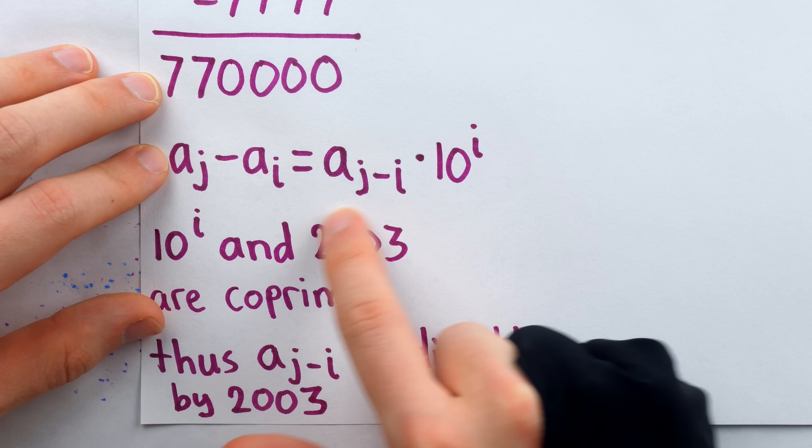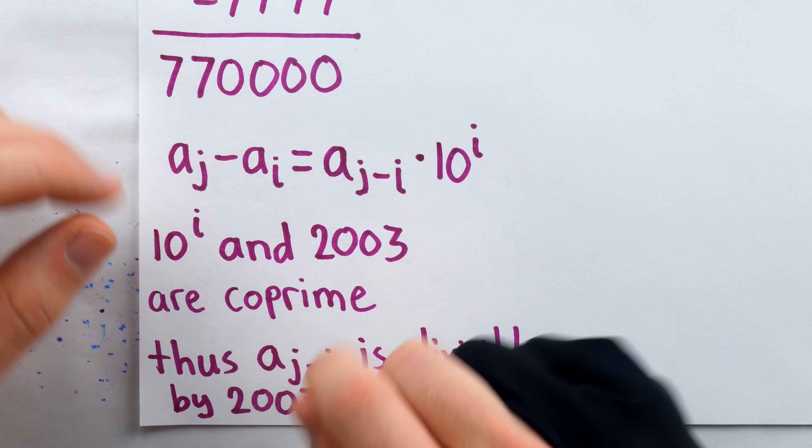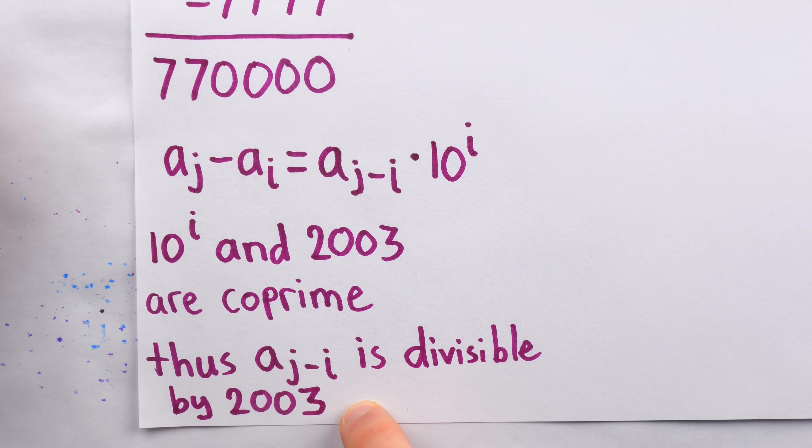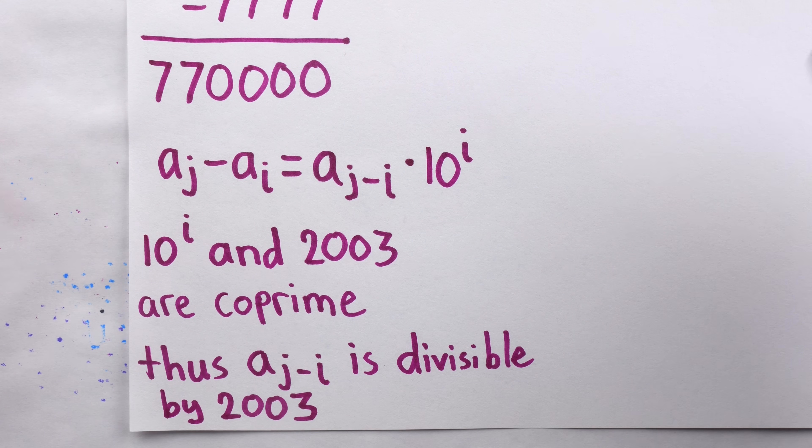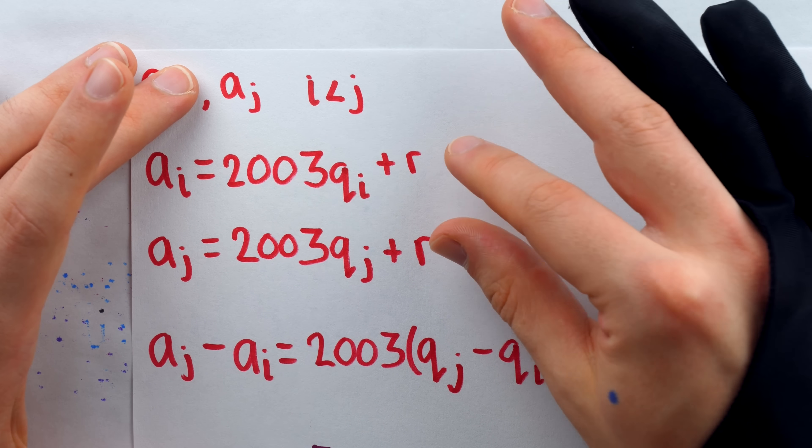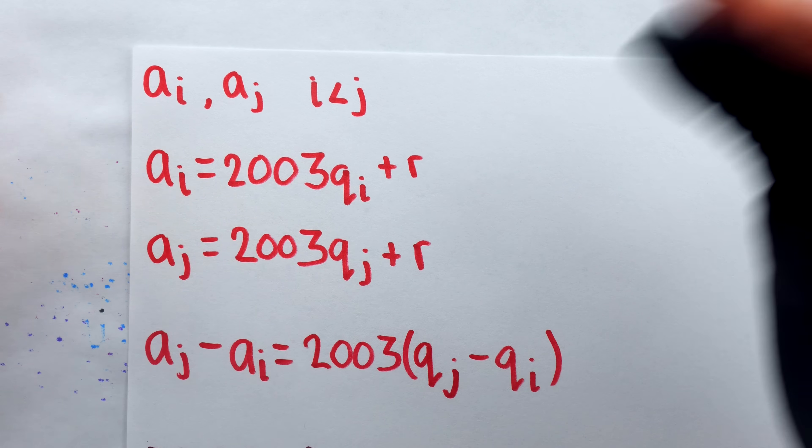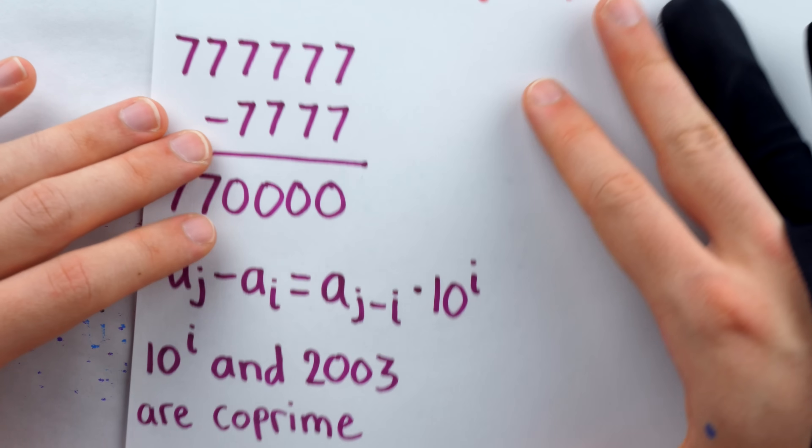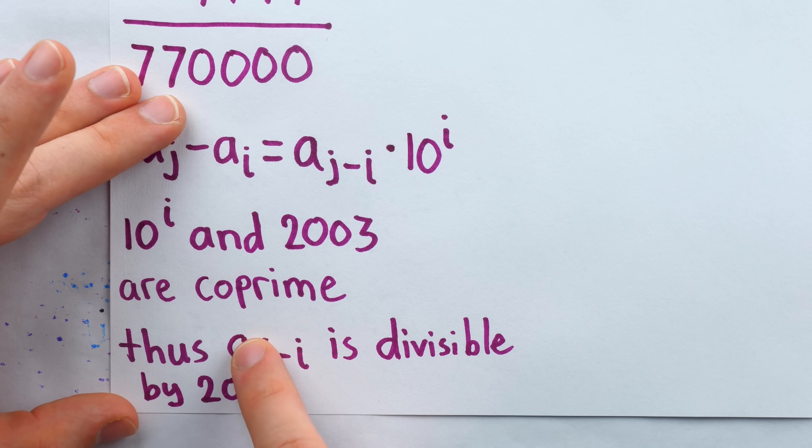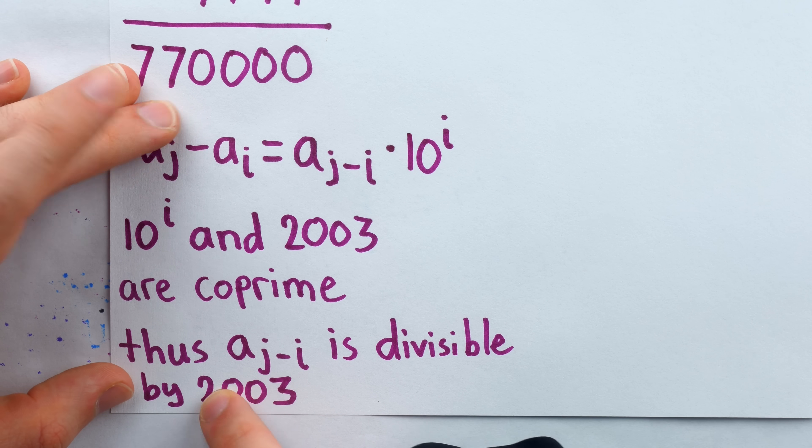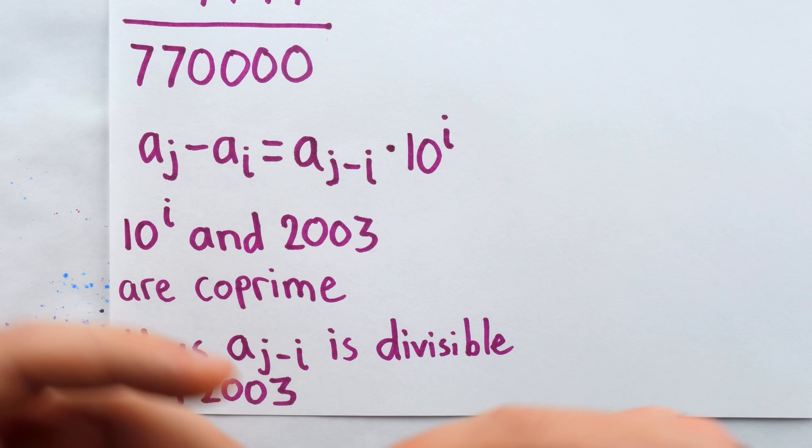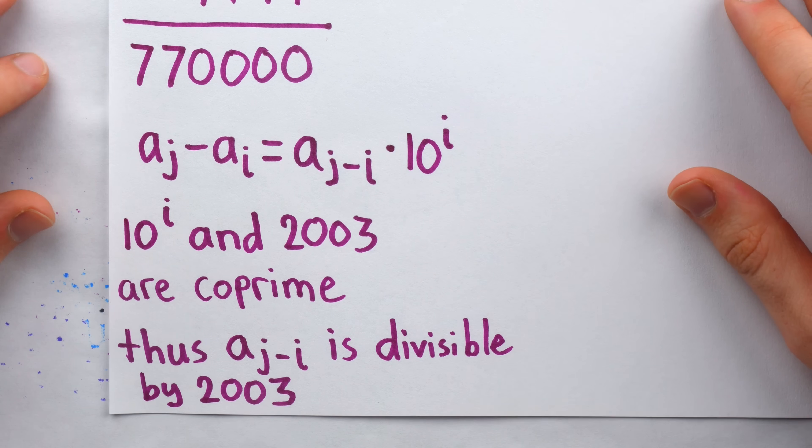As it turns out, 2003 is itself a prime number, but that's not a necessary fact for the argument. This really is completing what started as a contradiction argument. We got these two terms with common remainders by assuming that no terms were divisible by 2003, but we've shown that forces a contradiction, because that forces this term to be divisible by 2003. So in fact, it must be that the sequence contains at least one multiple of 2003.